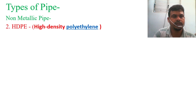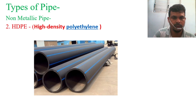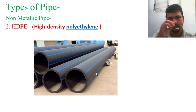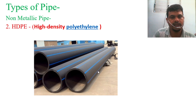Number 2 is HDPE — High Density Polyethylene. This pipe looks like this in the photos. Wherever you see this type of pipe, you can identify it by this type of marking and material. This is the HDPE pipe. It may also have different markings.